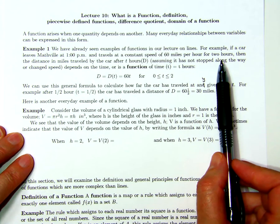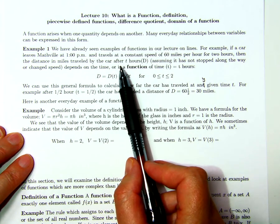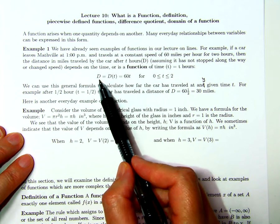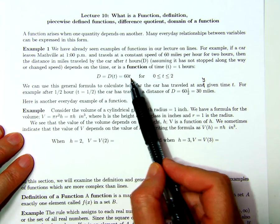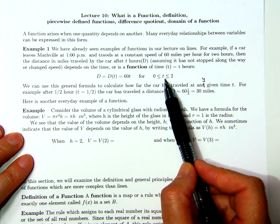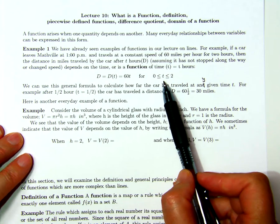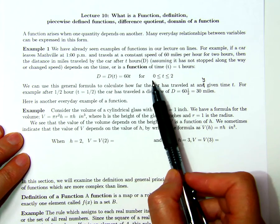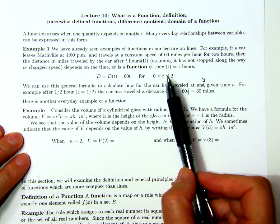...then the distance in miles traveled by the car after t hours was found to be D = 60t, where t is measured in hours. Of course, this activity for the car goes on for two hours, so this formula is valid for t between 0 and 2. This is the definition of a function.